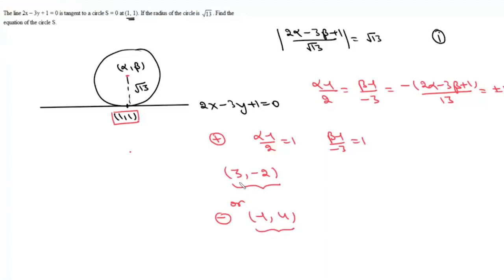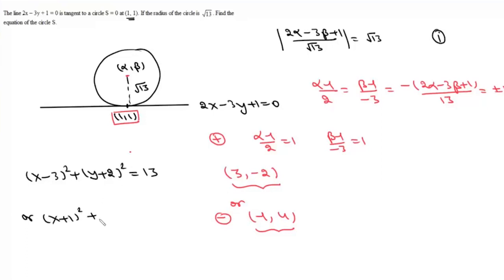Once we have the center and radius, we write the equation of the circle. It will be (x − 3)² + (y + 2)² = 13, or (x + 1)² + (y − 4)² = 13. That's one way of solving the problem.